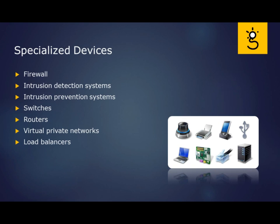Switches handle things at layer two, which we'll talk about later. Routers handle IP addresses. Virtual private networks are used for secure communications and secure remote access. Load balancers help scale out the amount of traffic you might be receiving, evening out the amount of work done on the backend servers.